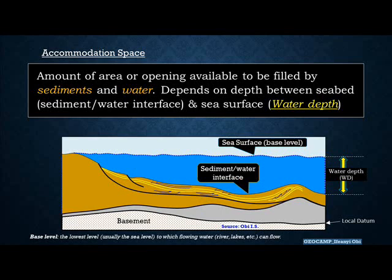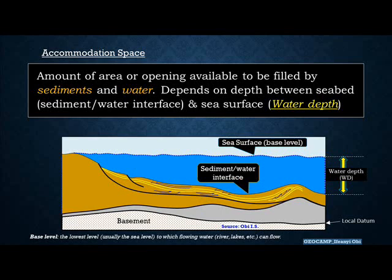Accommodation space refers to the amount of area or opening available to be occupied by both sediments and water, and that depends on the depth between the bottom of the sea — that's the seabed — and the sea surface. The section below shows everything together: we have the seabed, which is actually the same as the sediment-water interface, and the sea surface, which is also called the base level. That separation between both of them is called water depth.